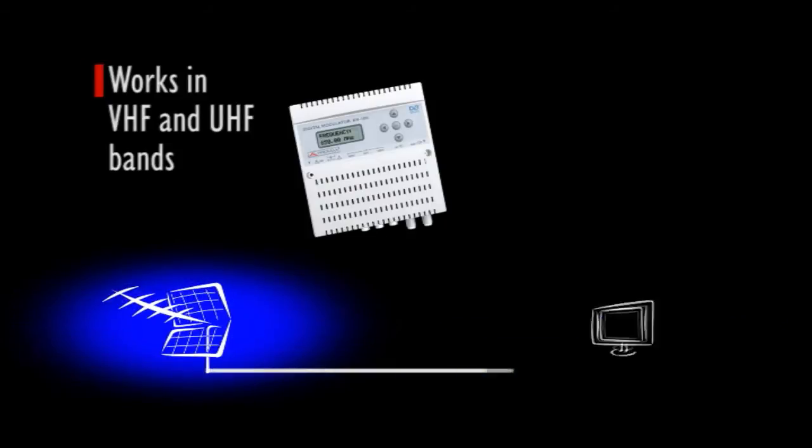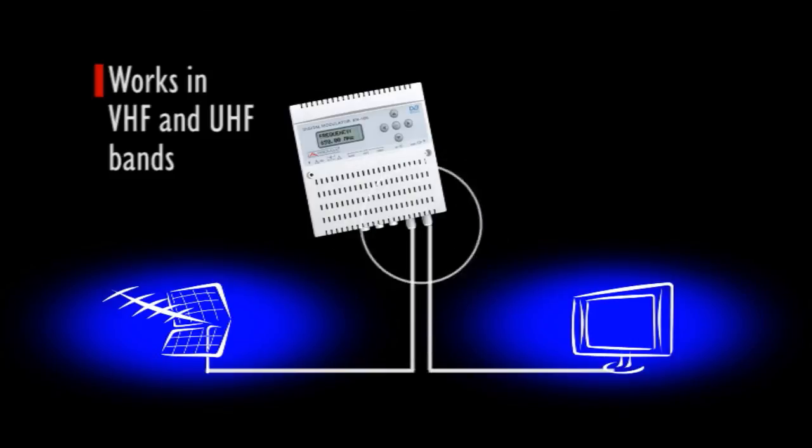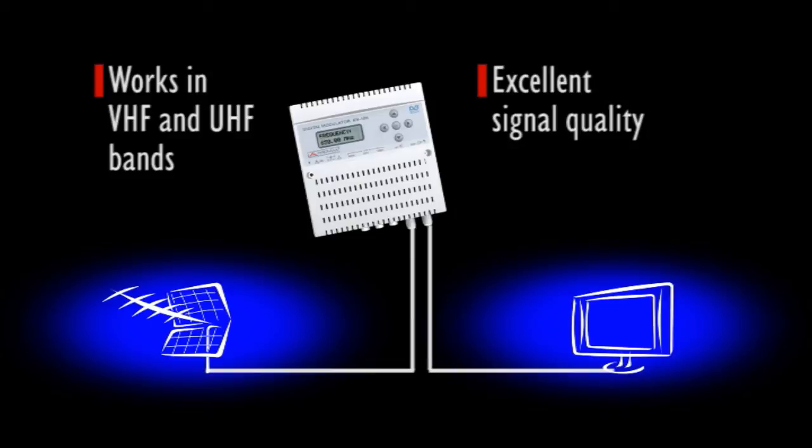The unit can work both in VHF and UHF bands and includes an RF combiner so that installation in an existing SMA TV network is really easy, with excellent signal quality which is fundamental to ensure that your EN106 will merge seamlessly in your system.